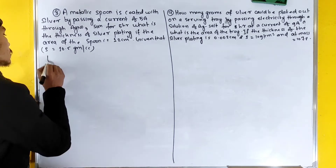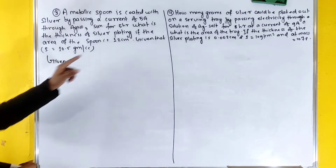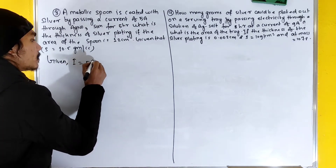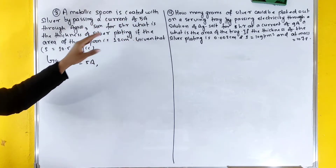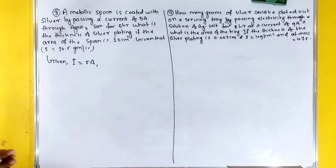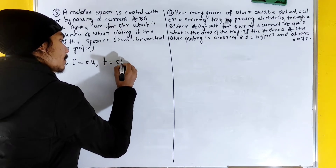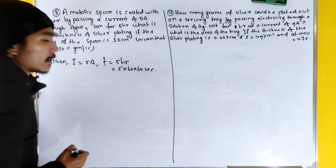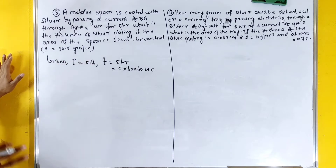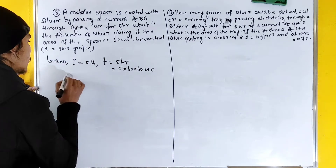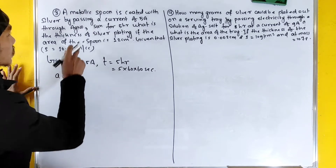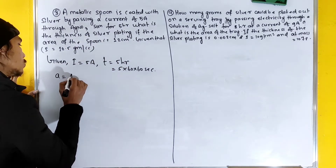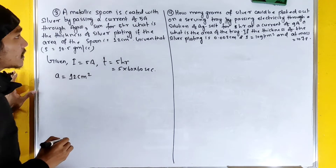The given values are: current I is equal to 5 ampere; time is 5 hours, that means 5 × 60 × 60 seconds; and area of the spoon is 12 cm².